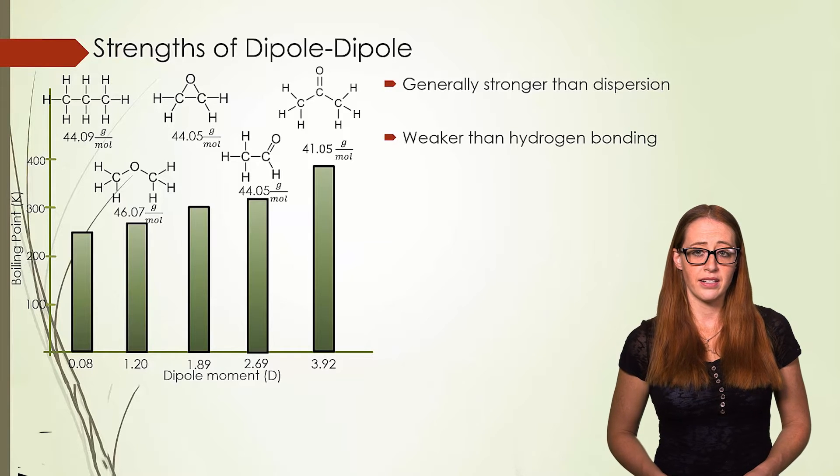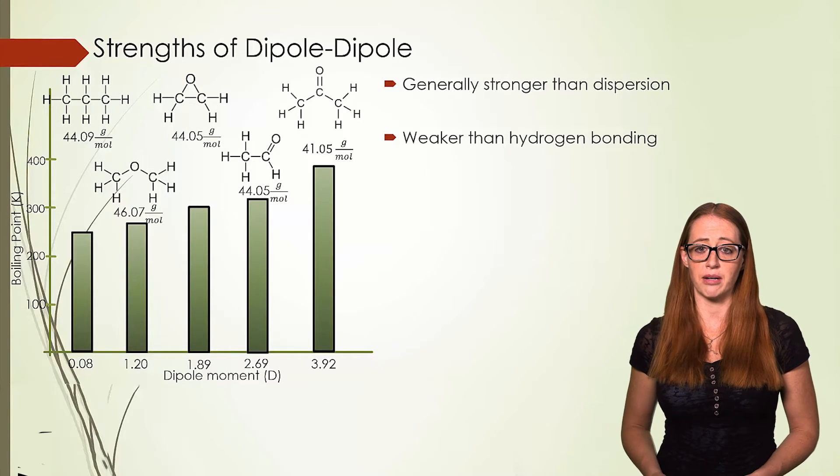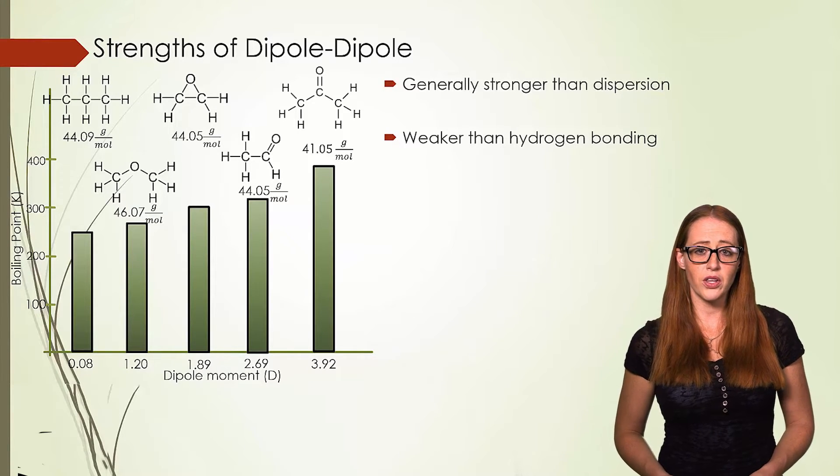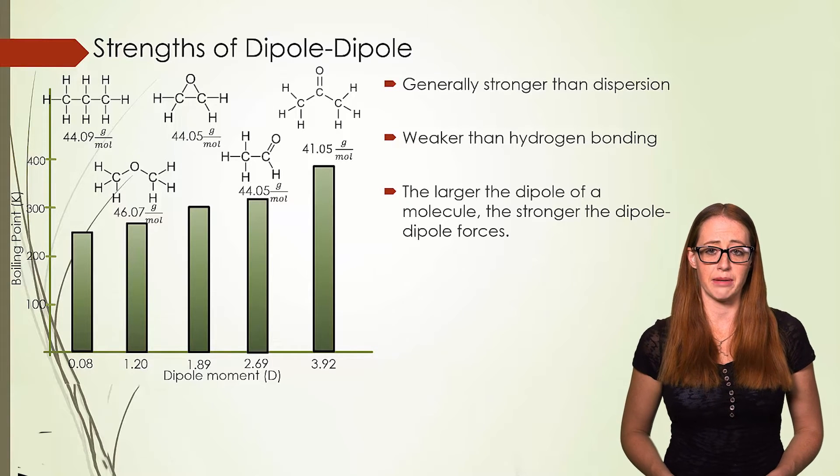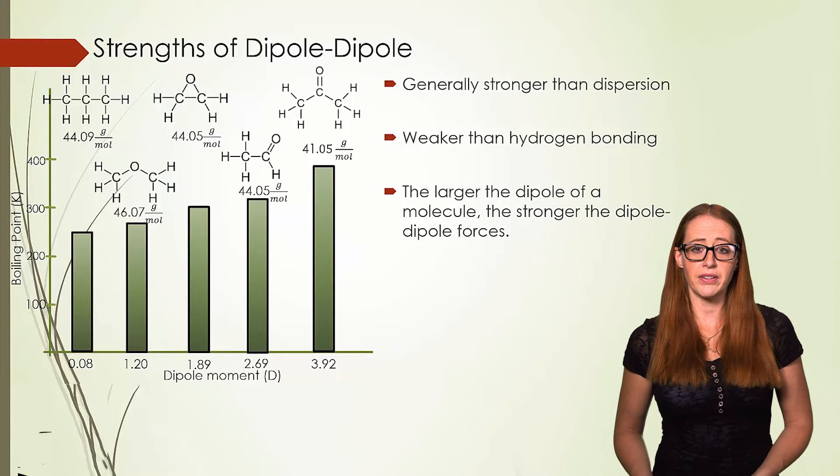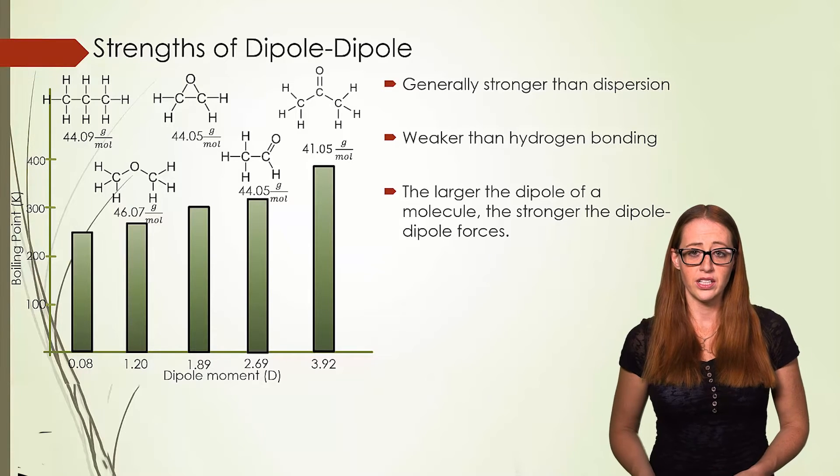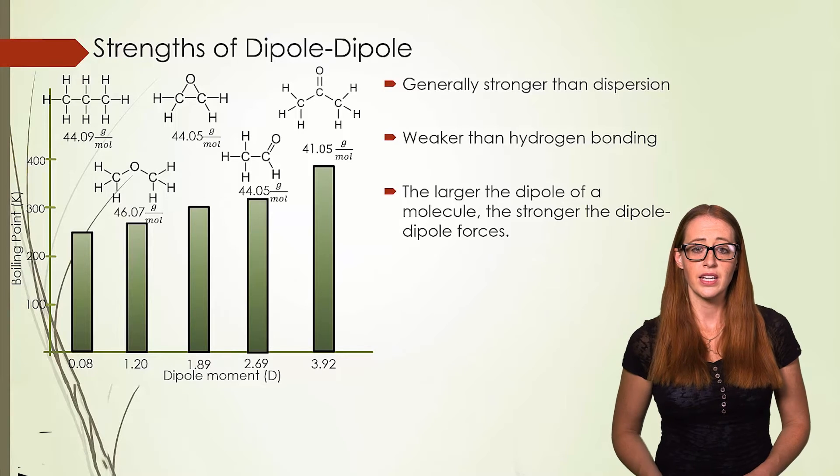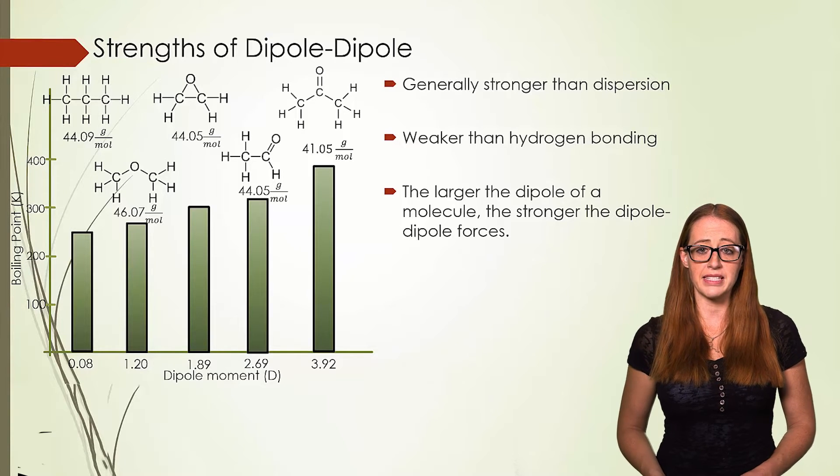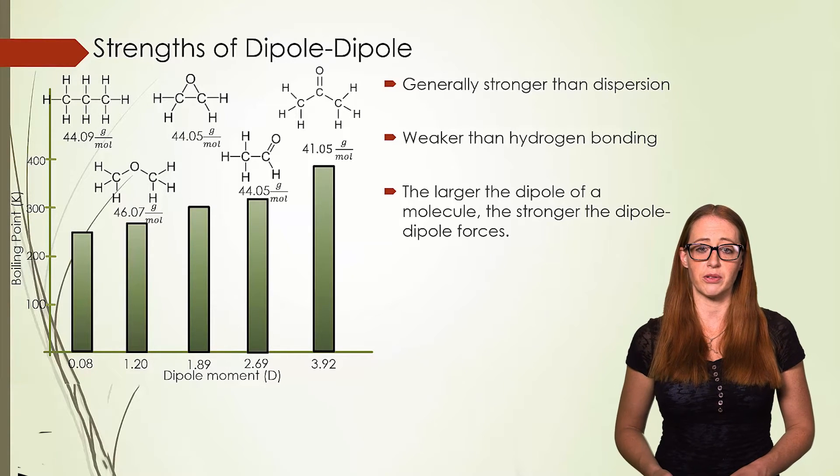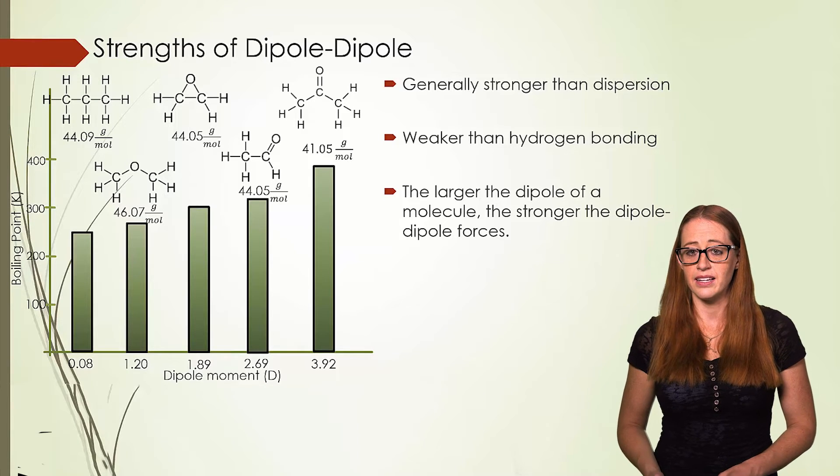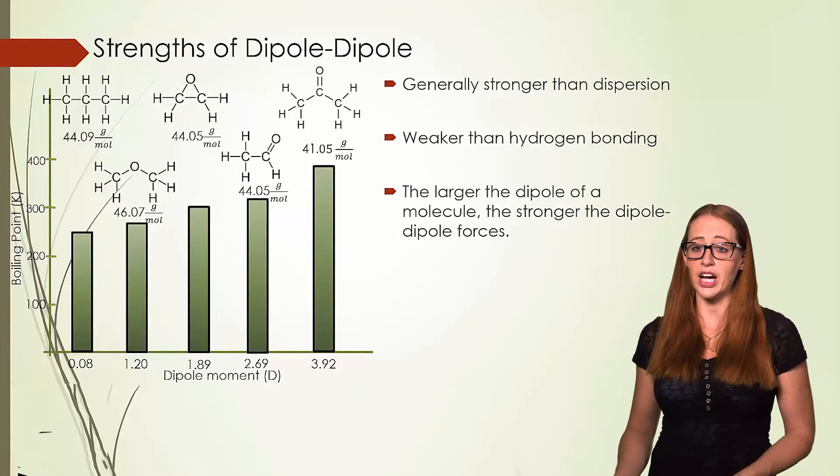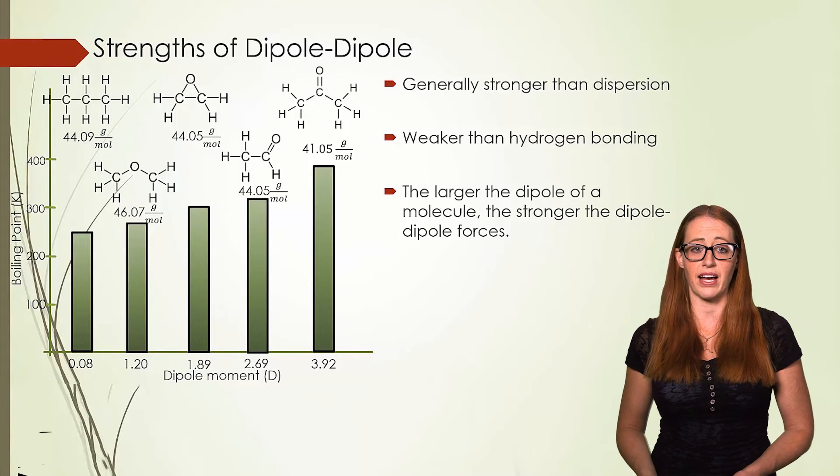We start with propane, something that is generally considered nonpolar, although it does have an exceptionally tiny dipole. We then compare that to something like acetonitrile, which has a very strong dipole thanks to very electronegative nitrogens. This strong dipole moment means that it has much stronger intermolecular forces, and as we'll see in a minute, this makes its melting and boiling temperature higher than those species that do not have that high of a dipole.